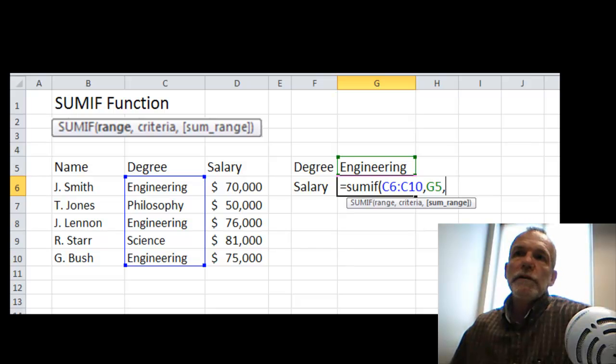And then when I find a match, I want to sum the values in a different range. And that's the sum range, which we'll use the salary column for.